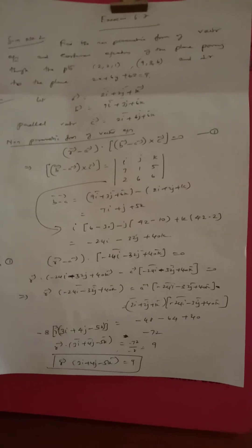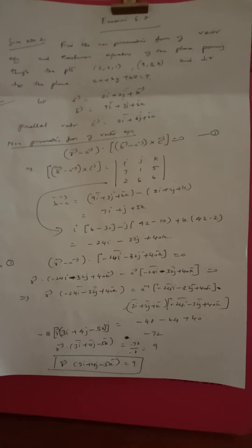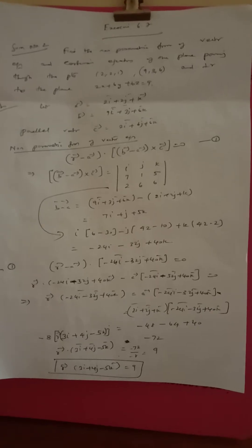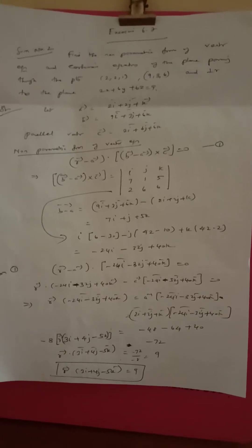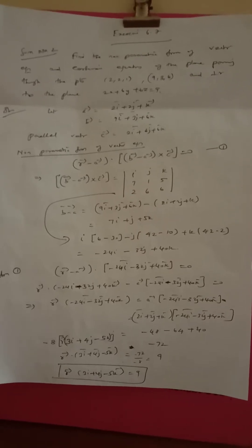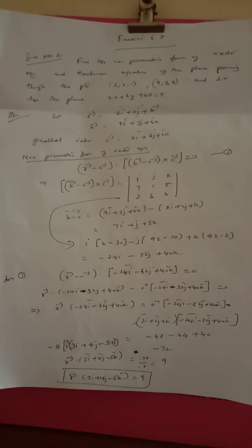Point 7, sum number 2. Find the non-parametric form of vector equation and Cartesian equations of the plane passing through the points (2, 2, 1) and (9, 3, 6), and perpendicular to the plane 2x + 6y + 6z = 9.